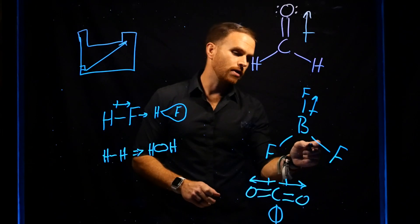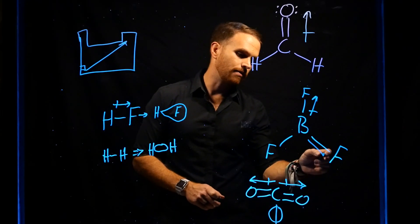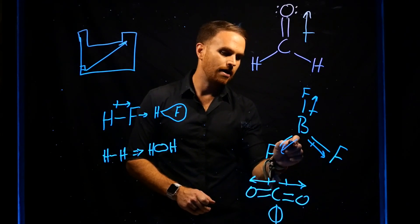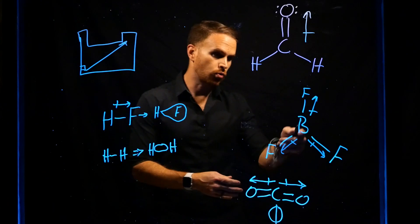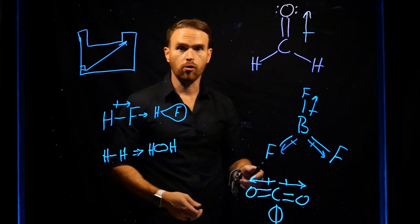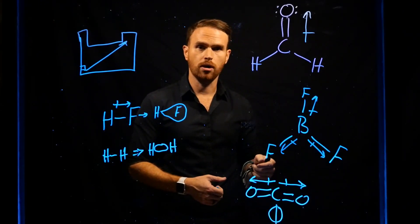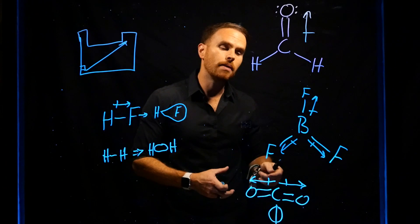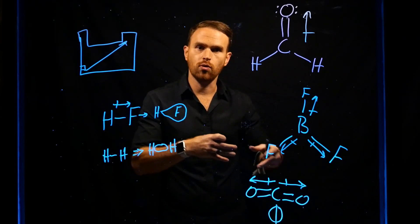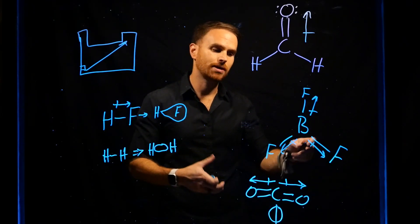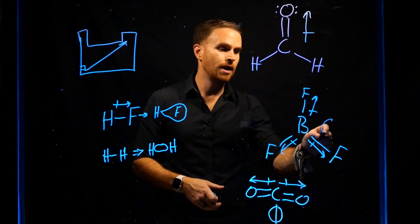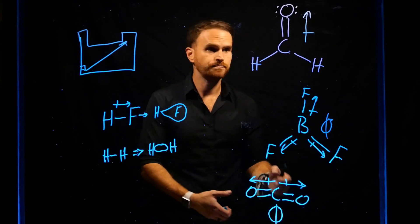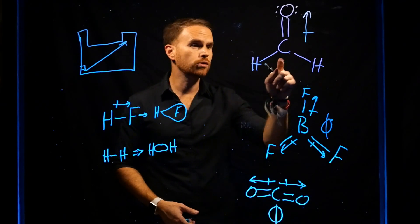If we look at BF3, we see three dipoles with polar covalent bonds between boron and fluorine. But because they're pulling in opposite directions, they cancel out, and BF3 is also a nonpolar molecule.